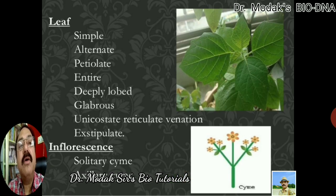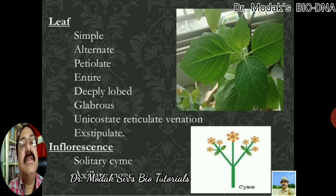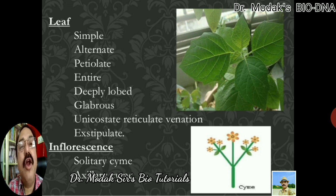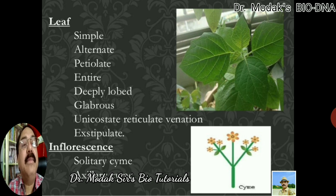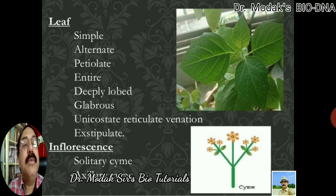If we talk about the leaf, it is simple — as seen in the diagram — and alternate, with one leaf present at each node. Each leaf possesses a long stalk and is therefore petiolate. The margin is entire, then deeply lobed. It is glabrous, having no hairs present on it. It has unicostate reticulate venation and no stipules — exstipulate.